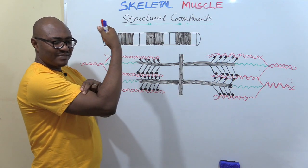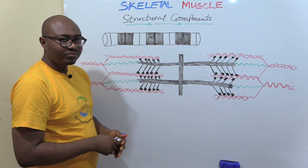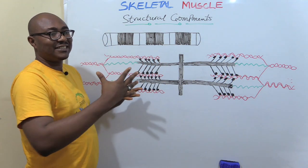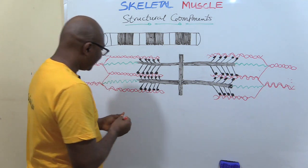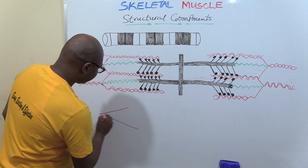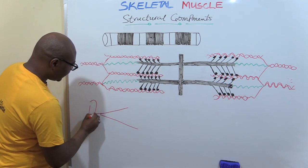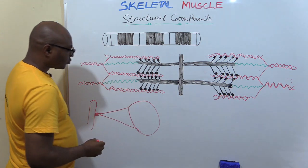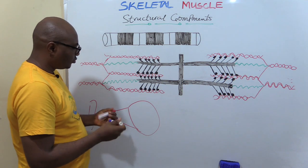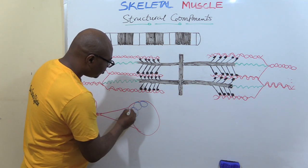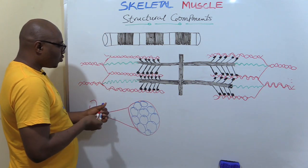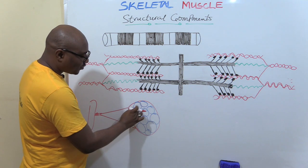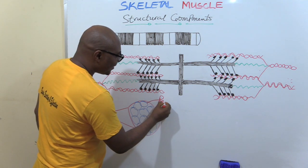For example, you have this biceps here — a well-known muscle. That muscle, this biceps, is known as the whole muscle, the one that attaches to a bone. So this is the bone, this is the tendon that attaches to the muscle, and this is now the whole muscle. Within that muscle, you now have smaller components, smaller units within it. The whole muscle is covered by epimysium, a connective tissue. Then these smaller units are separated from each other by what is known as perimysium.